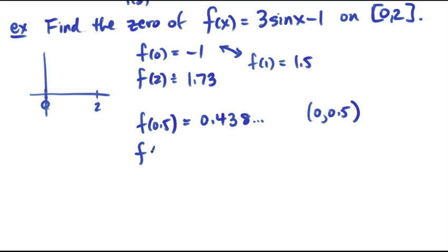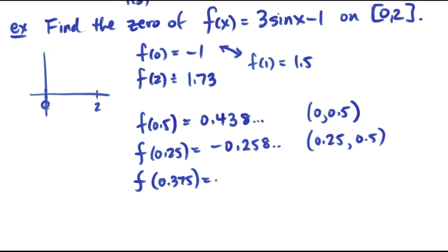So now I try, well what happens if I evaluate it at 0.25? Grab my calculator and now I get a negative value, it's about -0.258. So now I know that somewhere between 0.25 and 0.5 is my zero because of the sign change. So I pick another value somewhere in between there like 0.375 and I just keep finding the midpoint of these intervals and testing it. And so this gives me 0.0988 and some more decimal places, which is positive.